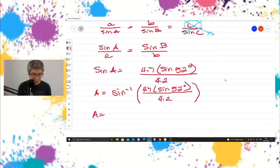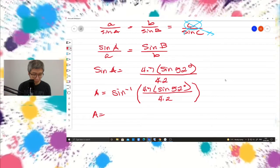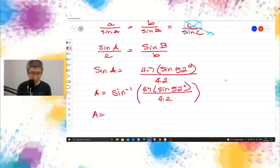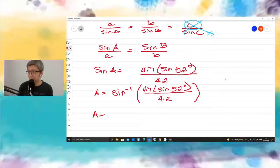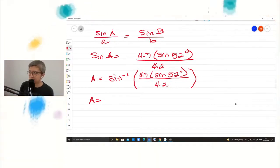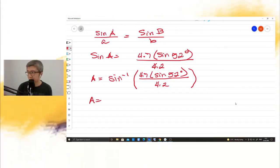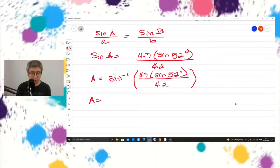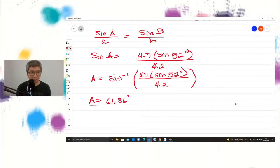So the measure of angle A. Let's use two decimal places. Linda, what is the answer? You must follow me with using your calculator also so that when I ask you, the answer is prepared already. So, 61.86 degrees.